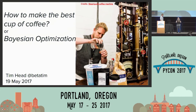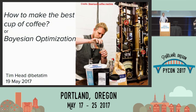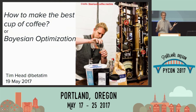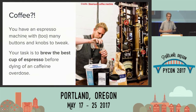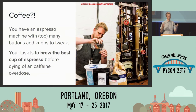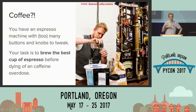Next up we have Tim talking about how to make the best cup of coffee. I will try to explain something fairly complicated, which is called Bayesian Optimization — by using the example of how to brew the best cup of coffee in the world without dying of caffeine overdose. Imagine you land yourself in a coffee shop in Portland, the barista has gone missing, and they have a pro coffee machine, a pro grinder, 15 different kinds of beans, and lots of different settings on both. You want to brew a cup of espresso without dying of caffeine overdose, which means you can only make so many before you're done. You need something better than just choosing things at random — and this is where Bayesian Optimization comes in.